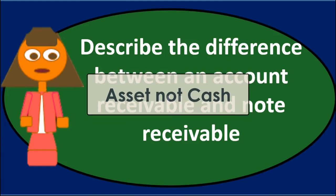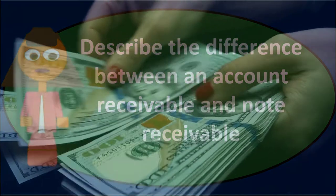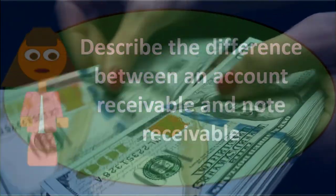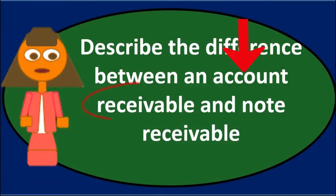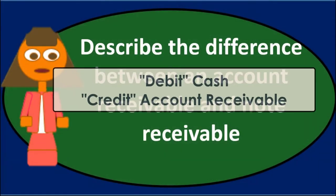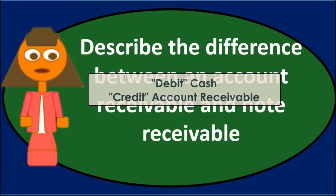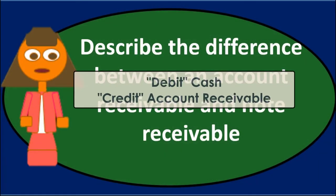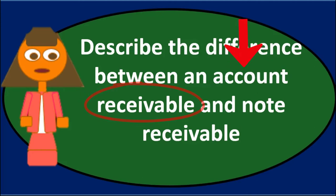The accounts receivable is an asset — not cash. It represents a kind of intangible asset, a claim to future cash that we're going to receive at some point in the future. We already recorded the revenue at the point in time we recorded the receivable when we earned it. When we collect the cash, the journal entry would be a debit to cash and a credit to accounts receivable, reducing the accounts receivable.